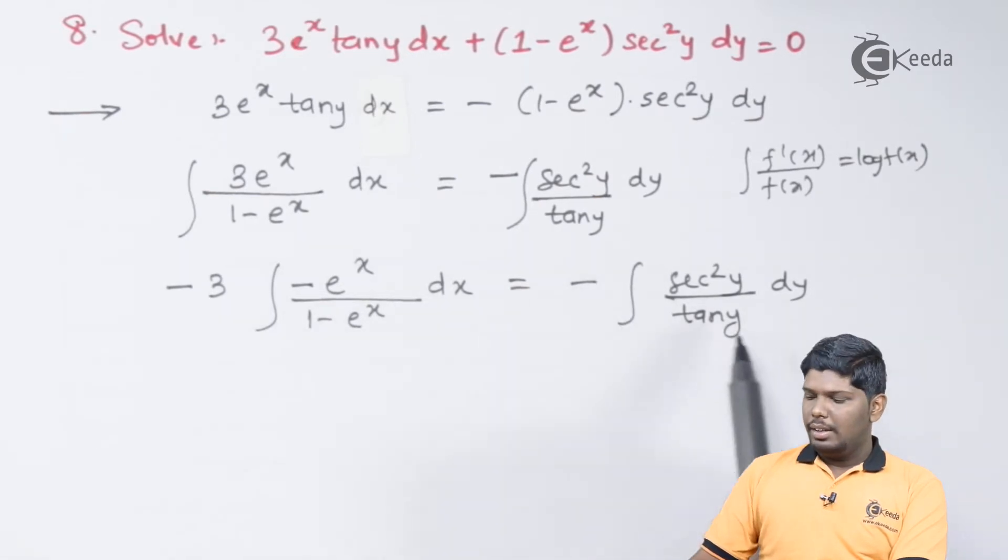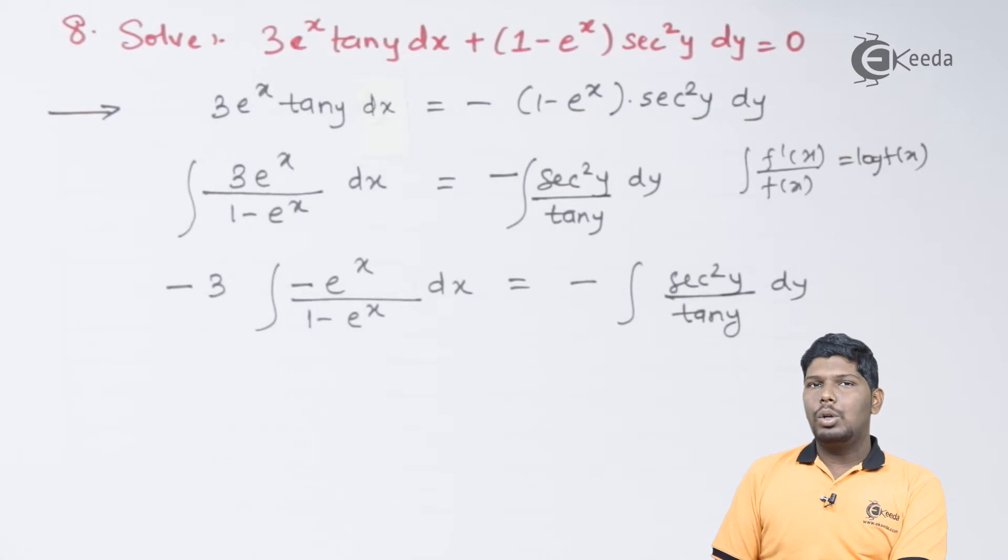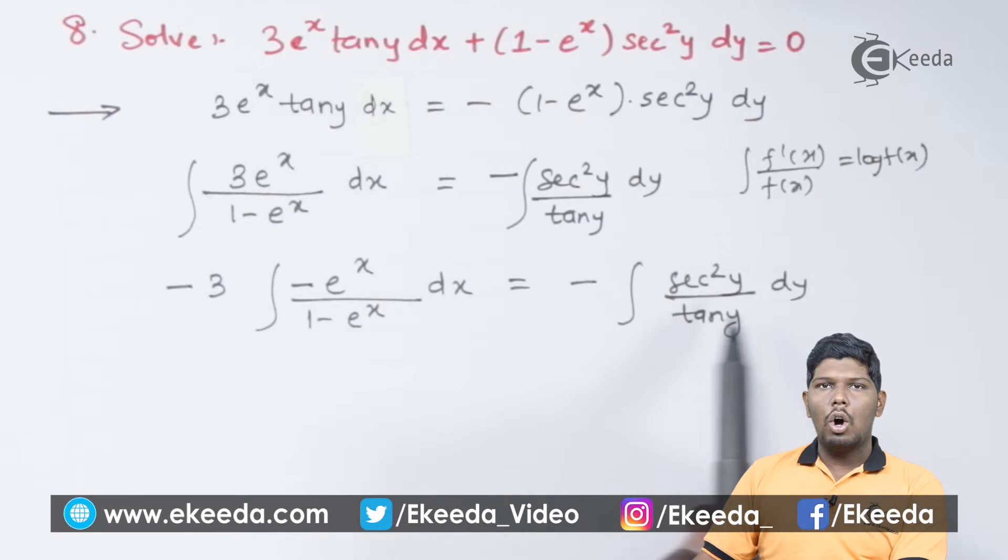Similarly, on the right hand side, derivative of tan y will be equal to sec square y. So, here no adjustment is required. We can directly write it as log of tan y.